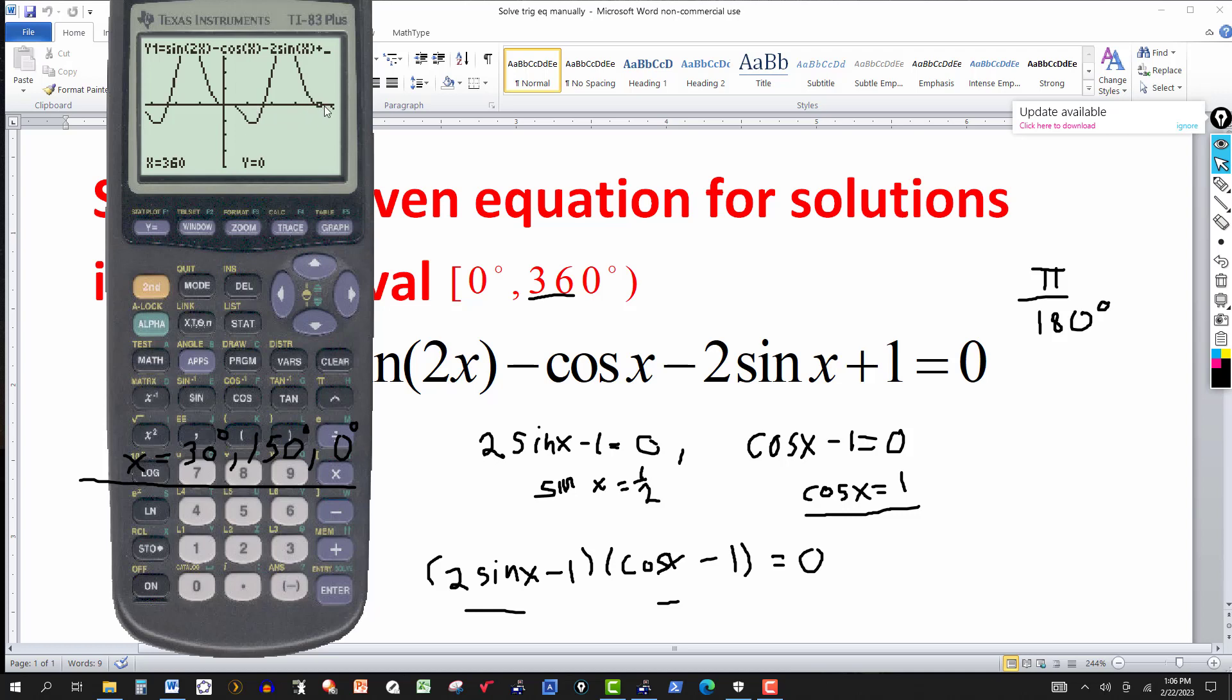Now, if it turns out that you don't get an exact answer, you don't get 360, zero, and about 150, and this was zero, 30, and this was zero. That tells you it's exact.